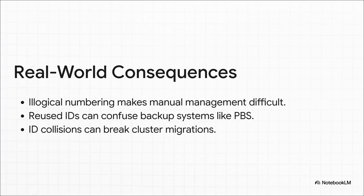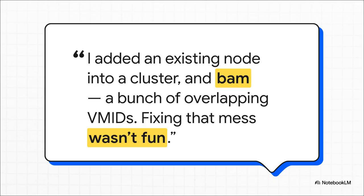This isn't just about making things look pretty — this has real-world consequences. At first it's just annoying trying to find a VM in a messy list, but it can get way more serious. If you try to get clever and manually reuse an ID, you could totally confuse your Proxmox backup server, and suddenly your backups are pointing to the wrong machine. And the absolute worst-case scenario? Trying to add a new node to a cluster and having ID collisions — that can stop a migration dead in its tracks. Overlapping VMIDs, conflicts everywhere — it's a critical failure, and cleaning up that kind of mess is the opposite of fun.